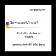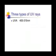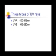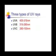There are three different types of ultraviolet radiation that are emitted from the sun. The three types of UV radiation — UVA, UVB, and UVC — differ in their ranges of wavelengths.